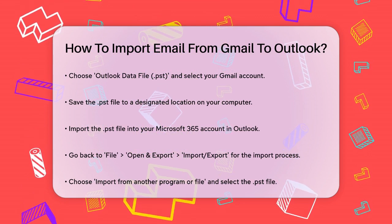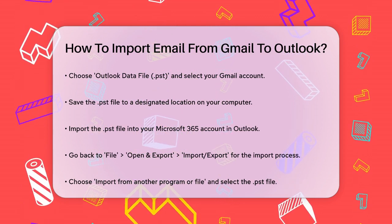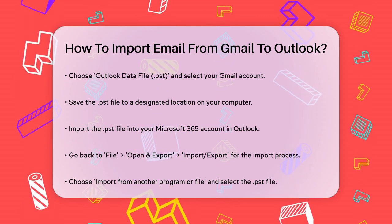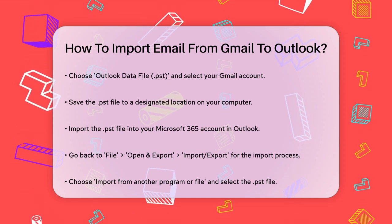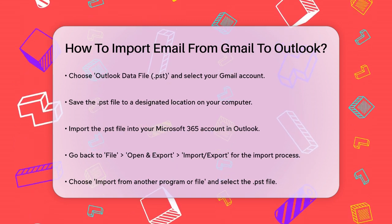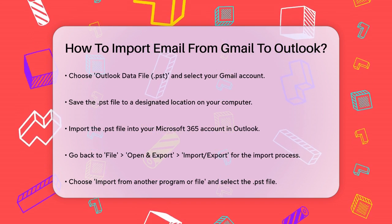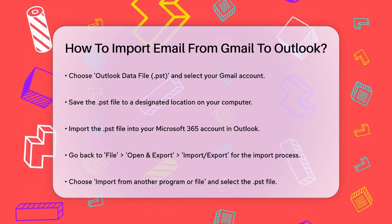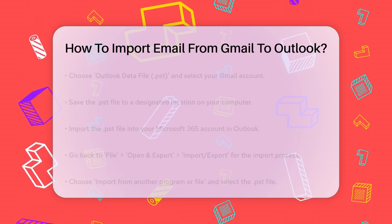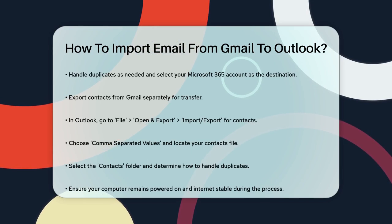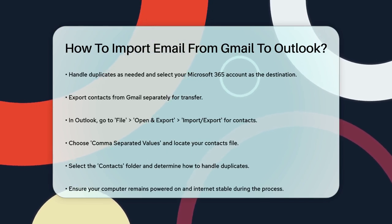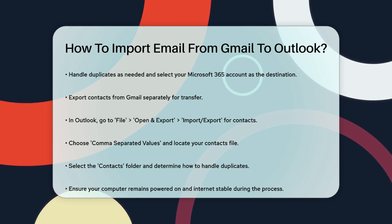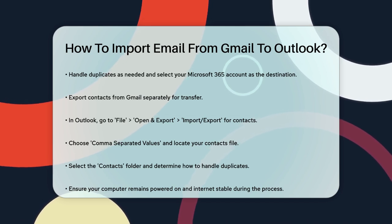Select how you want to handle duplicates and choose your Microsoft 365 account as the destination folder. For contacts, you'll need to export them from Gmail separately. In Outlook, go to File, Open and Export, Import/Export, and select Import from another program or file. Choose comma-separated values and browse to the location of your contacts file. Select the Contacts folder and choose how to handle duplicates.